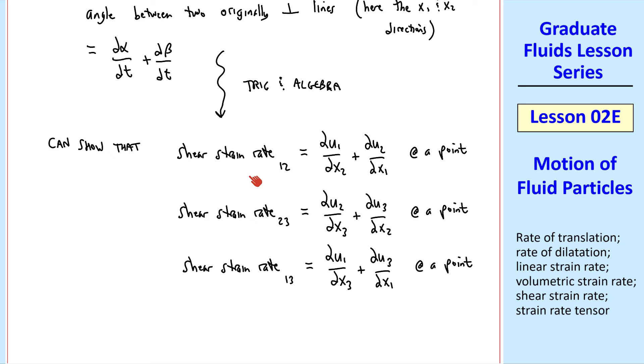You can also define strain rate 2, 1, where we just switch 2's to 1's and 1's to 2's, 3, 2 and 3, 1, etc. So there's actually six of these, but you can see that strain rate 1, 2 would be the same as strain rate 2, 1. In other words, it's symmetric.